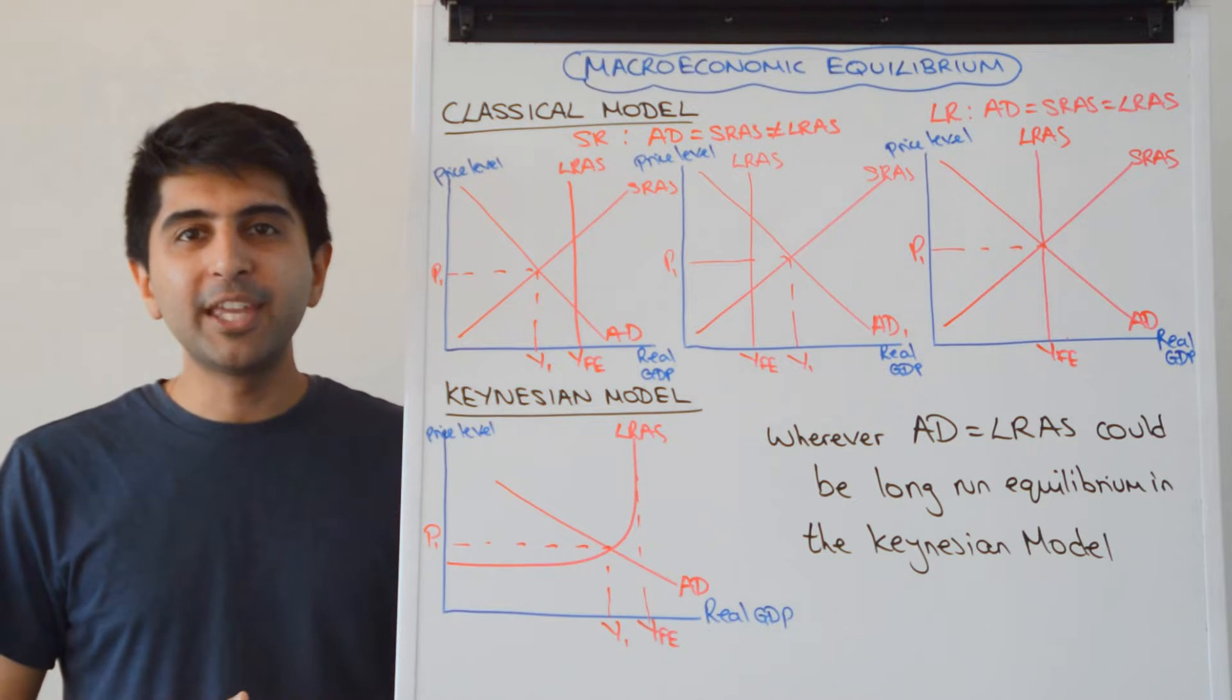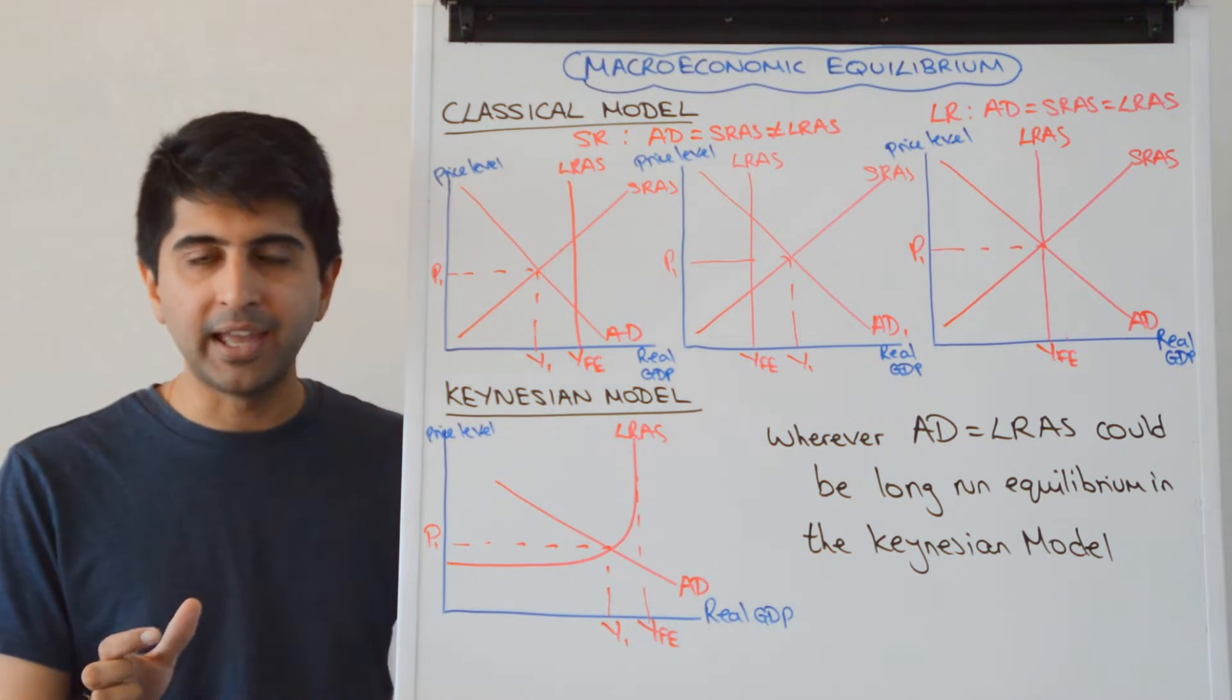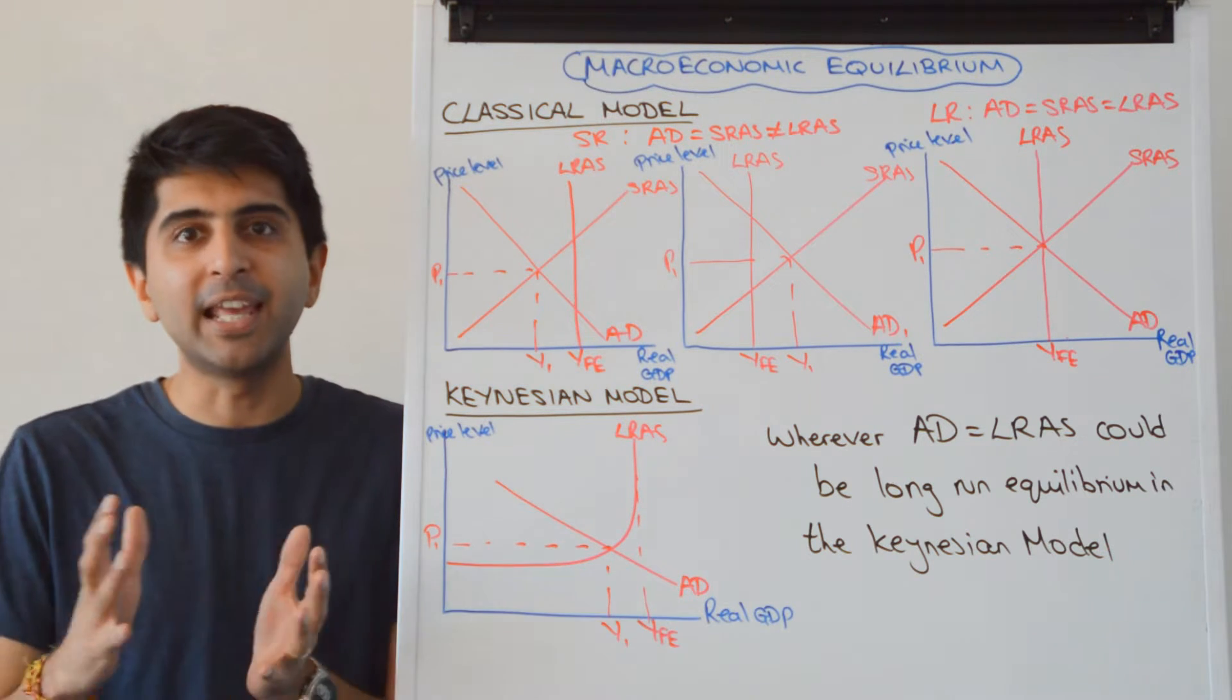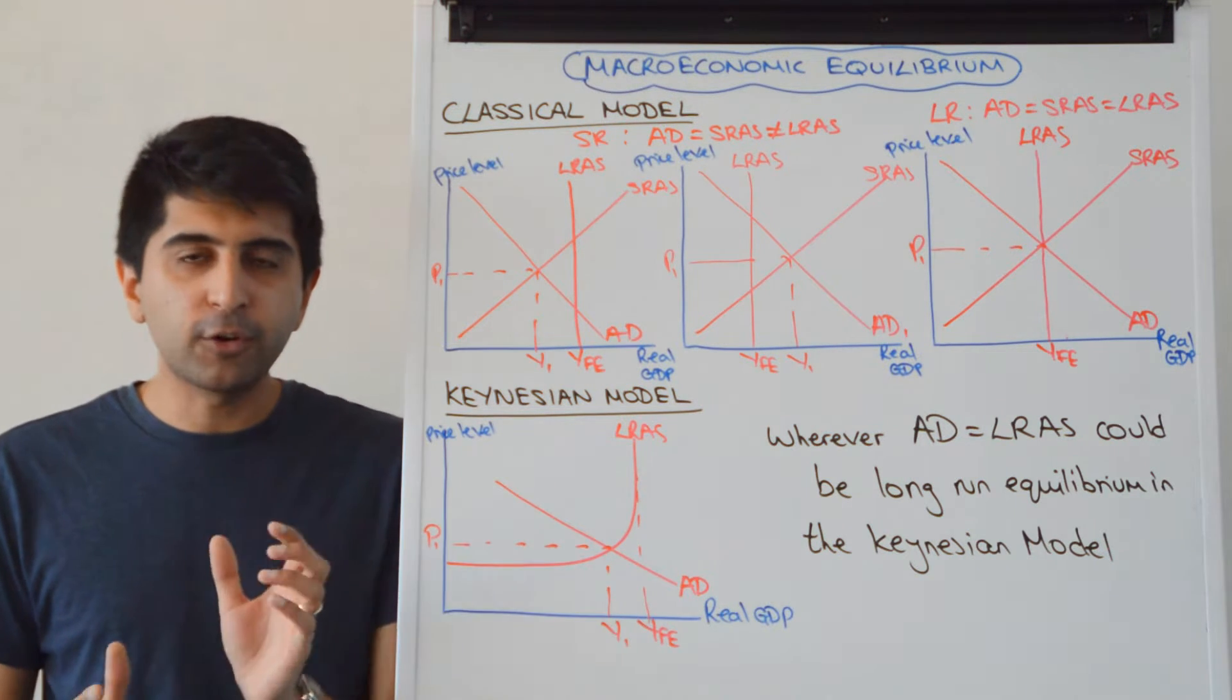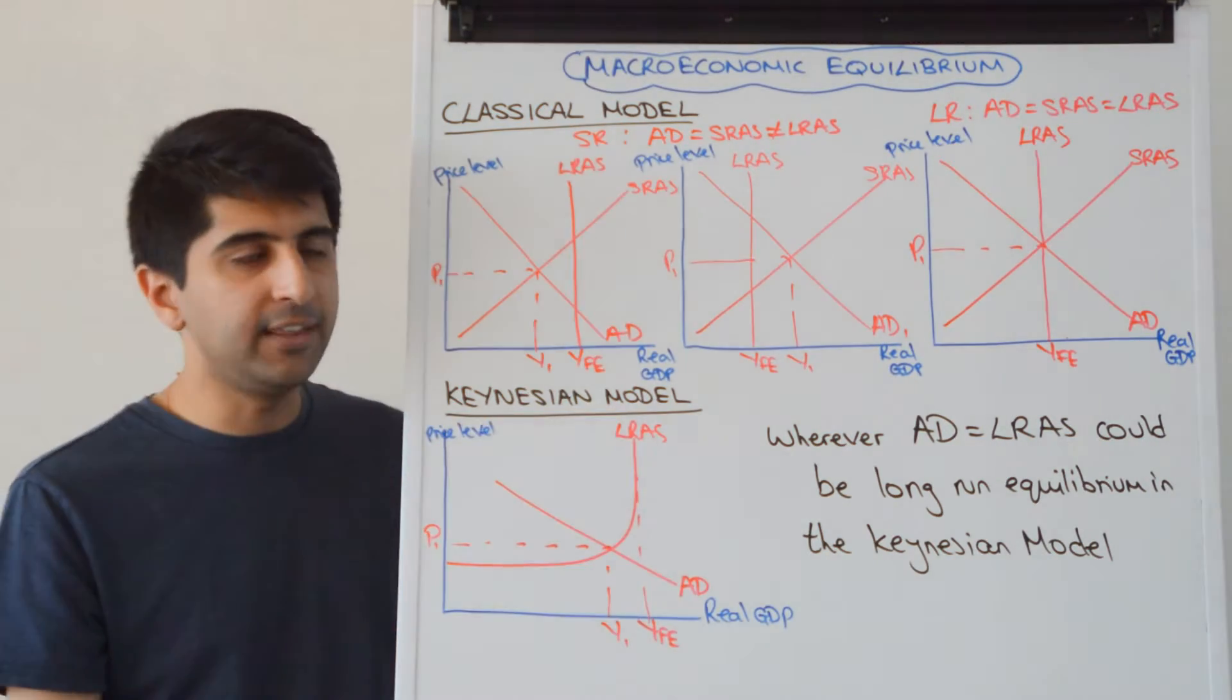Hi everybody! Macroeconomic equilibrium occurs where aggregate demand equals aggregate supply. The problem is that there are so many different ways of showing aggregate supply, meaning there are numerous ways of showing macro equilibrium. In this video we're going to cover all those different ways, looking at the classical model and the Keynesian model.